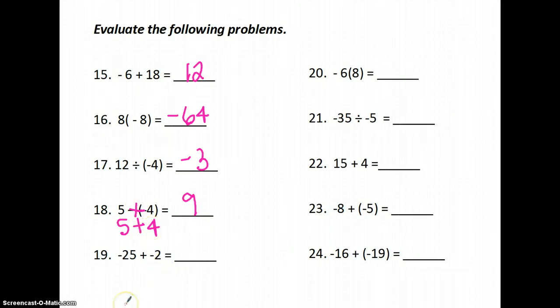Next one, -25 + (-2). My signs are the same, so I add them, and I keep the sign. -27. 8 times -6. Positive times a negative is a negative. 8 × 6 is -48. -35 divided by -5. A negative divided by negative is a positive, so my answer is 7. 15 + 4. There's no trick here. It is simply 19.